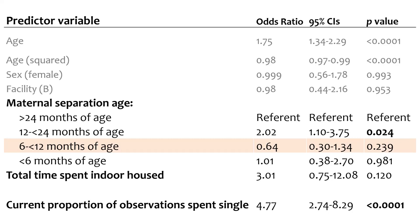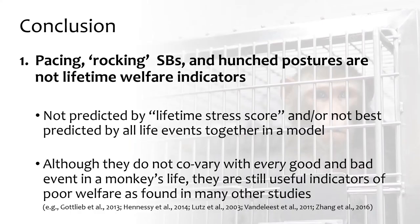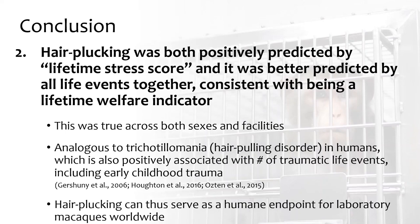In conclusion, pacing, rocking stereotypic behaviours, and hunched postures are not lifetime welfare indicators, as they were not predicted by the lifetime stress score and were not best predicted by all life events together. However, while they don't co-vary with every good and bad event, they are still useful indicators of specific forms of poor welfare and should not be ignored if observed. On the other hand, self-directed hair plucking, seen in 45% of the sample, was both positively predicted by the lifetime stress score and better predicted by all life events together — indicating it is a lifetime welfare indicator, true across both sexes and facilities, and analogous to trichotillomania in humans, also positively associated with traumatic life events.